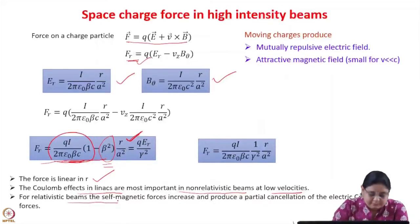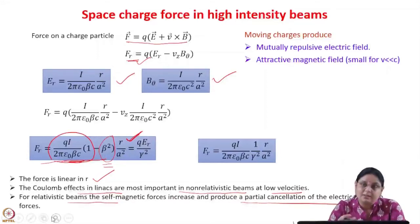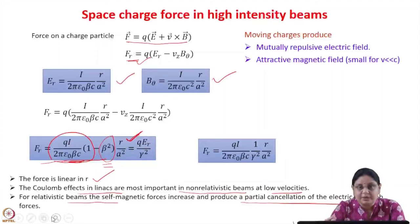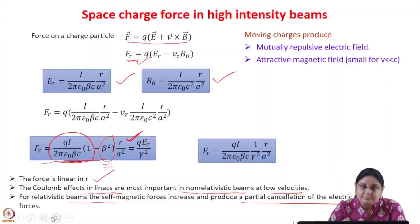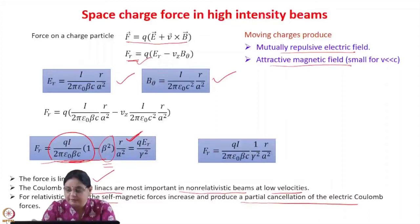For a relativistic beam, the self-magnetic forces increase and produce partial cancellation of the electric Coulomb forces. At higher energies, or for electrons — which become relativistic at lower kinetic energies — these space charge forces are not so important. They are more important for high current ion beams at lower energies. Moving charges produce mutually repulsive electric fields and attractive magnetic fields.